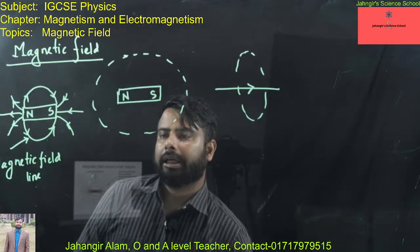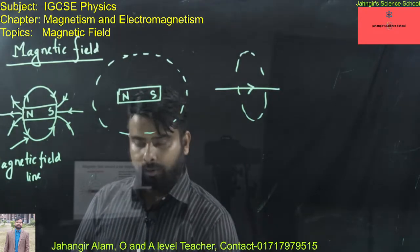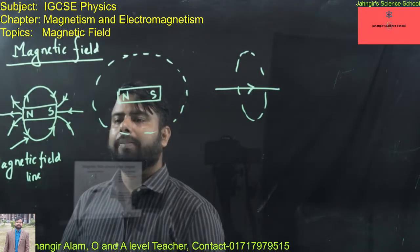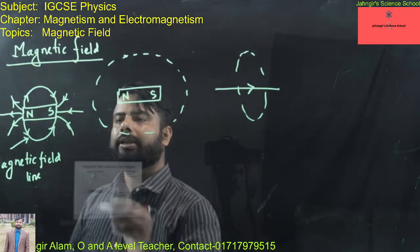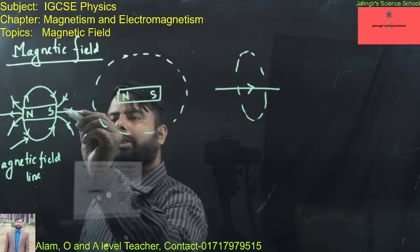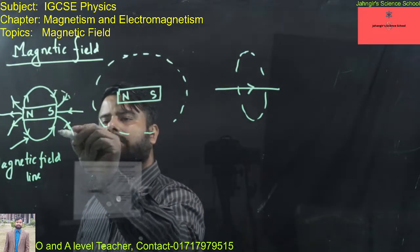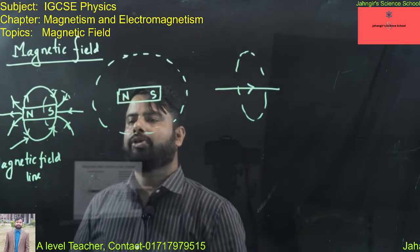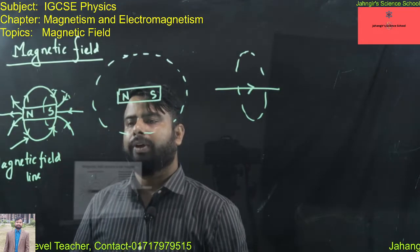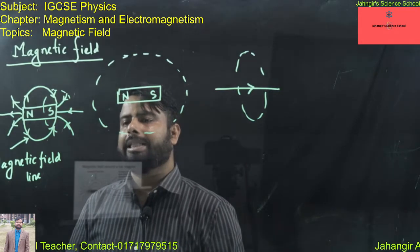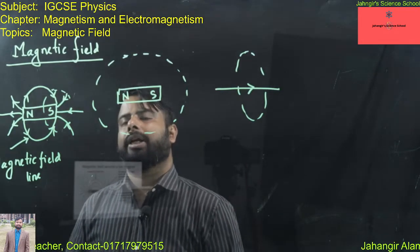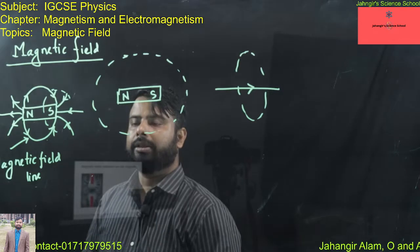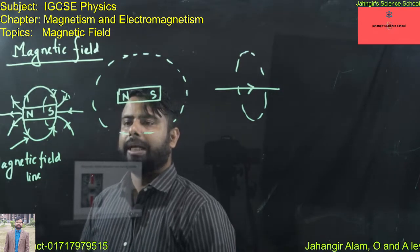Where the lines of force are closer together, the magnetic field is stronger. The denser the magnetic field lines, the stronger the magnetic field in that region.